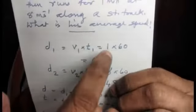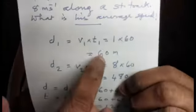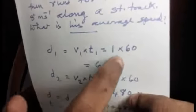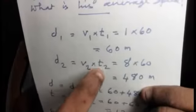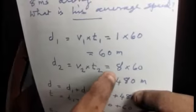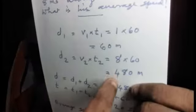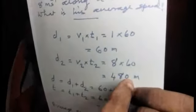Distance equals speed into time. D1 equals V1 into T1 equals 1 meter per second into 60 seconds, that is 60 meters. D2 equals V2 into T2 equals 8 meters per second into 60 seconds, that is 480 meters.